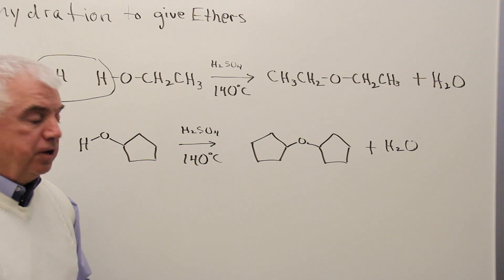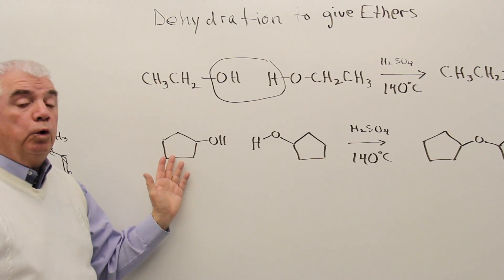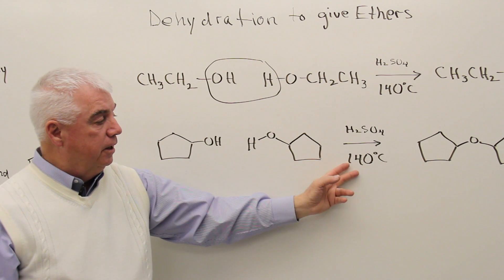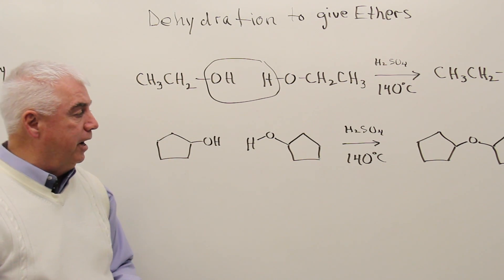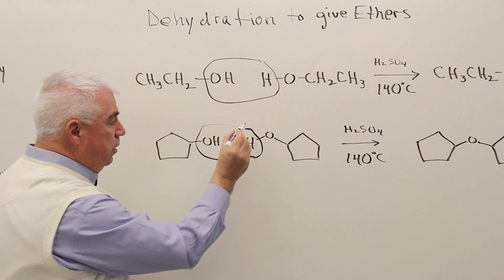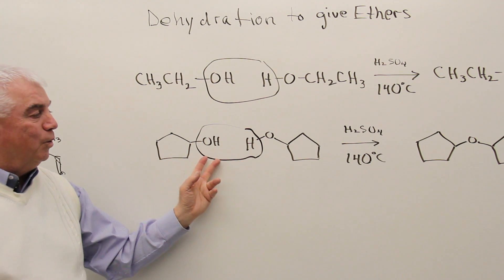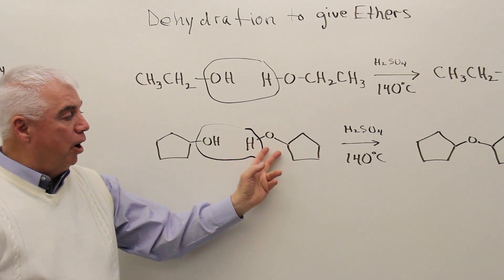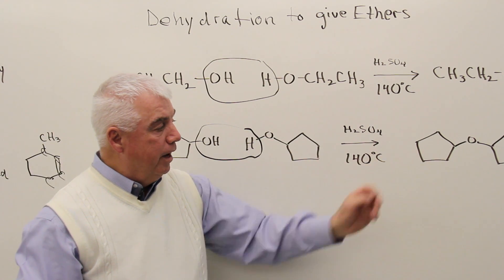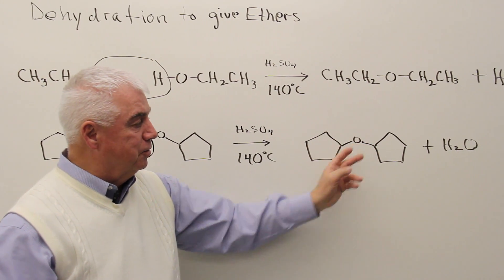Let's look at another example of that reaction. If I had two cyclopentanols and treated them with sulfuric acid at 140 degrees centigrade, we're going to remove a water molecule from between these two structures. Water is one of the products, and the other product links the two structures together, so we have the ether functional group bridging the two cyclopentane rings.